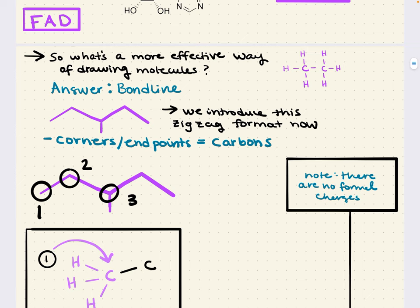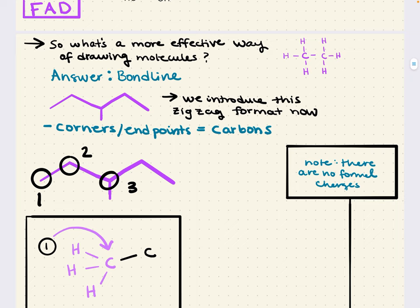Bondline is the way to go because it's a zigzag format where corners and endpoints represent carbons. Instead of explicitly writing C for carbon everywhere, the zigzag format implies carbon at every endpoint or corner. Hydrogens attached to carbon are also never drawn — they are implied. So if a carbon has no charge and is neutral, you remind yourself that carbon can form four bonds. Count how many bonds you see to that carbon, and the remaining bonds must be implied hydrogens.